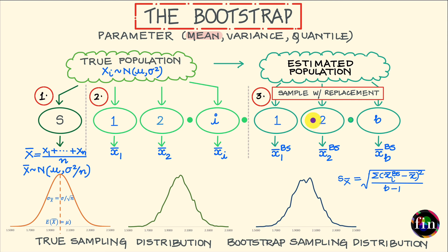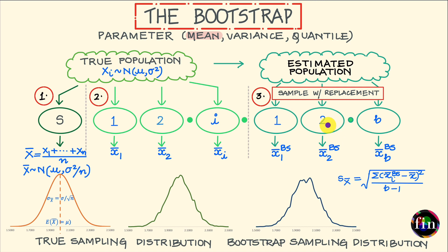The bootstrap technique, number one, is easy both to understand and to implement. Number two, it is not burdened by assumptions the way the theoretical approach was. Number three, it is universal in nature and can be cross-applied to various chosen parameters of interest. And lastly, unlike the repeated-sampling approach, the bootstrap does not require you to repeatedly sample from the true population, making it economically quite feasible in practice.